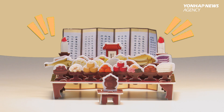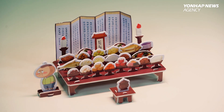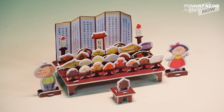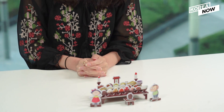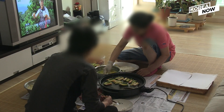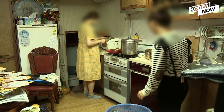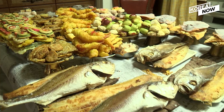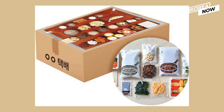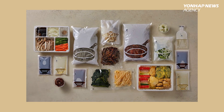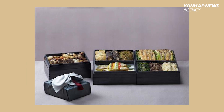Here's the charye table for this year's Chuseok. From grandparent to granddaughter, every family member gathers around to eat. Back in the past, the burden of preparing food for charye usually fell on the female members of households. But nowadays, with more women entering the workforce, the charye table is becoming simpler — they even deliver charye foods from markets or restaurants. So this is one of the ways we enjoy Chuseok here in South Korea, with lots of food and lots of love. Happy Chuseok to everyone!